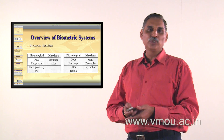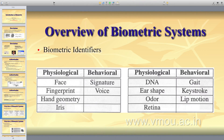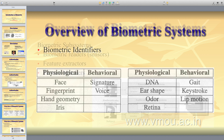The overview of biometric identifiers includes physiological types — face, fingerprint, hand geometry, iris — and behavioral types — signature, voice, DNA, ear shape, retina. Also in behavioral: gait (the way of walking), keystroke pattern (the way of typing on the keyboard), and lip movement.